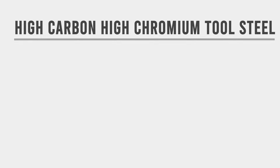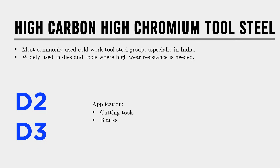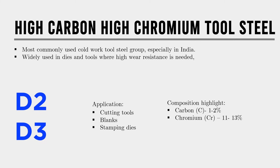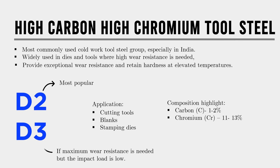The D grade — high carbon, high chromium tool steel — is commonly used for cold work tooling, especially in India. It's widely used in dies and tools where high wear resistance is needed, such as cutting tools, blanks, and stamping dies. D grade tool steels typically contain 1 to 2% carbon and 11 to 13% chromium, providing exceptional wear resistance and the ability to retain hardness at elevated temperatures. D2 is the most popular grade; if maximum wear resistance is needed but impact load is low, go for D3.